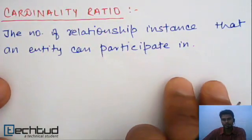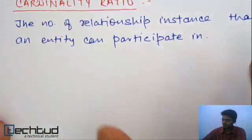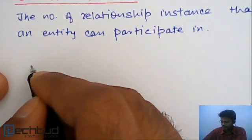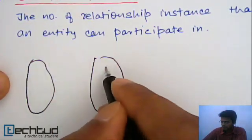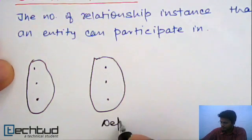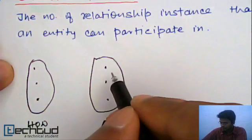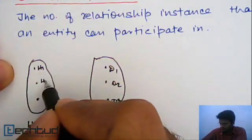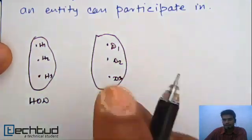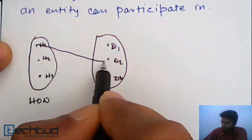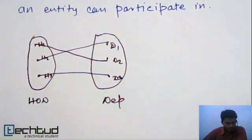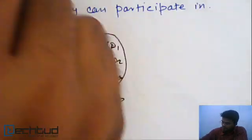We have three types of cardinality ratio. The first one is one-to-one. Consider department and HOD — d1, d2, d3 and h1, h2, h3. Each department will have only one HOD, so the relationship will be one-to-one: each department maps to exactly one HOD. We call this a one-to-one relationship.